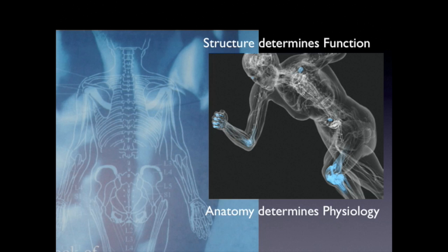Structure determines function. When I can see the structure, then it's so much easier for me to understand how it works. In the same way, we say anatomy is going to help determine physiology. We take anatomy first before we take physiology, because it would be very hard to understand how something works if you don't know what it looks like, if you don't know what its parts are, if you don't know the structure of it. And the other way around, structure really illuminates that.